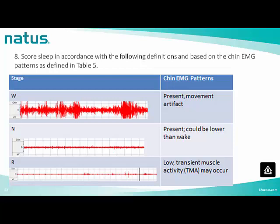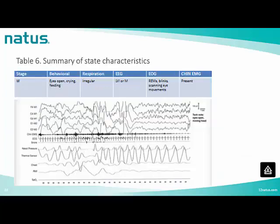This is a 30-second window example scored as stage W because: eyes are open, the patient is crying, respiration is irregular, EEG shows LVI or mixed pattern, EOG shows rapid eye movements, blinks, and scanning eye movements, and chin tone is present.